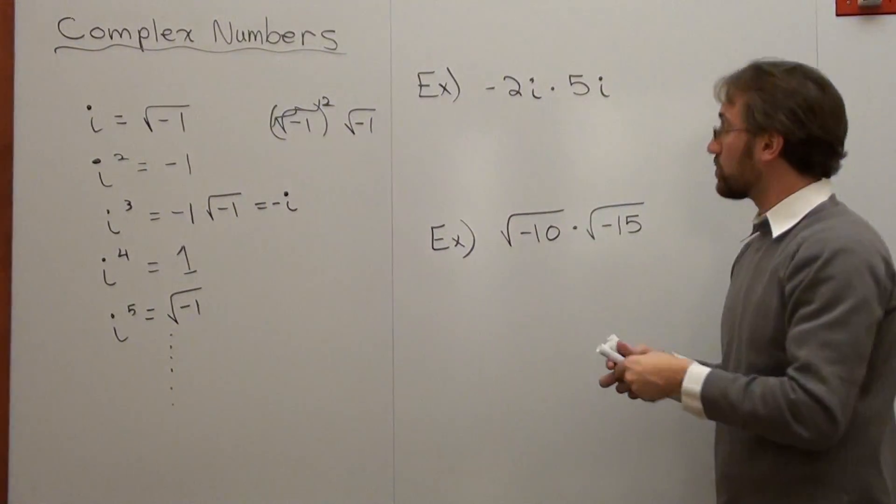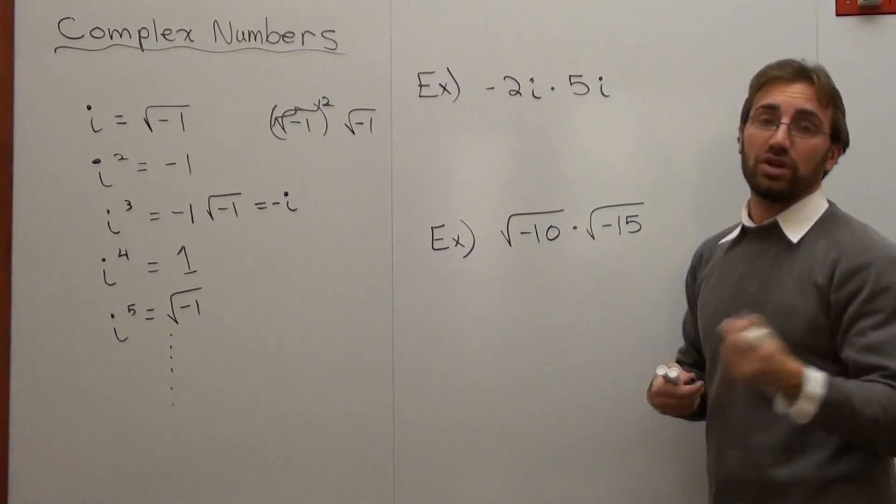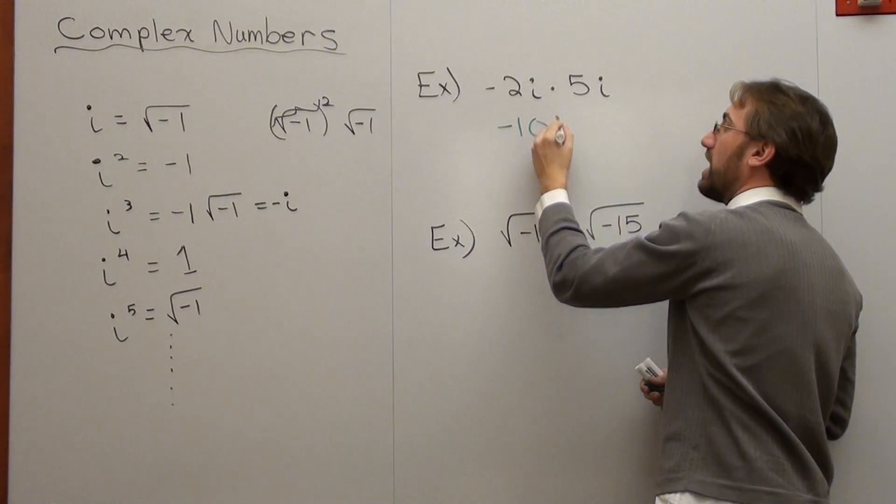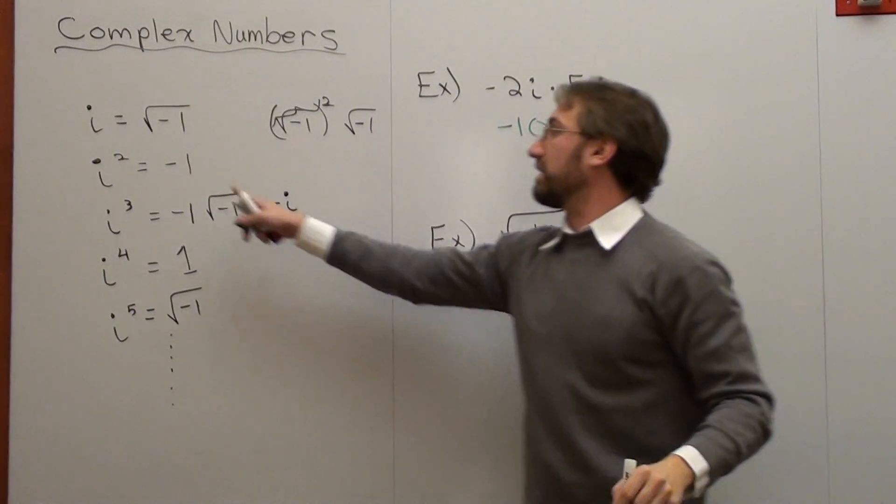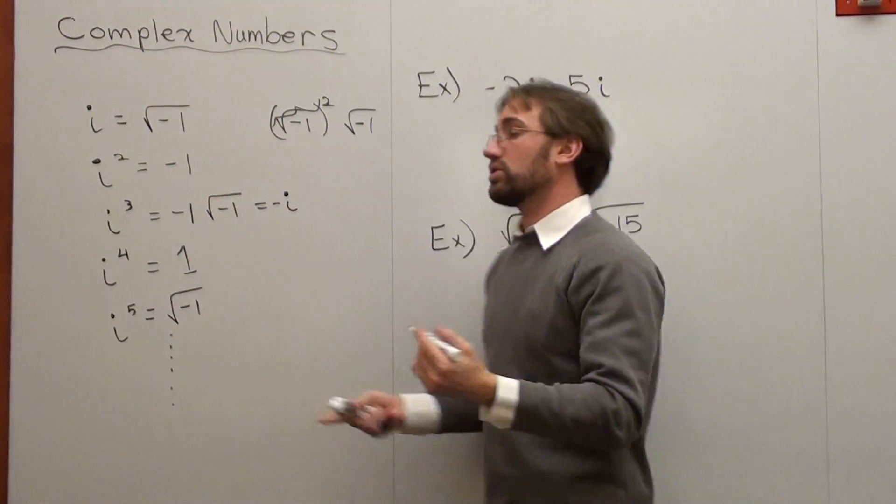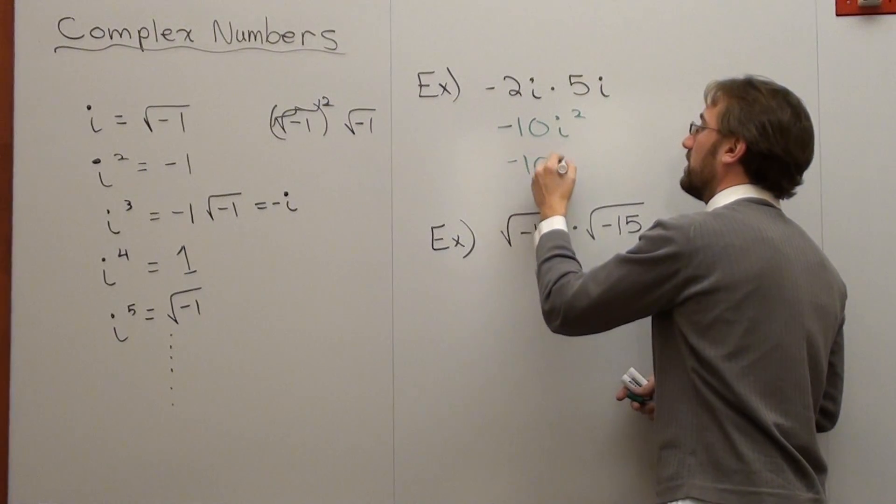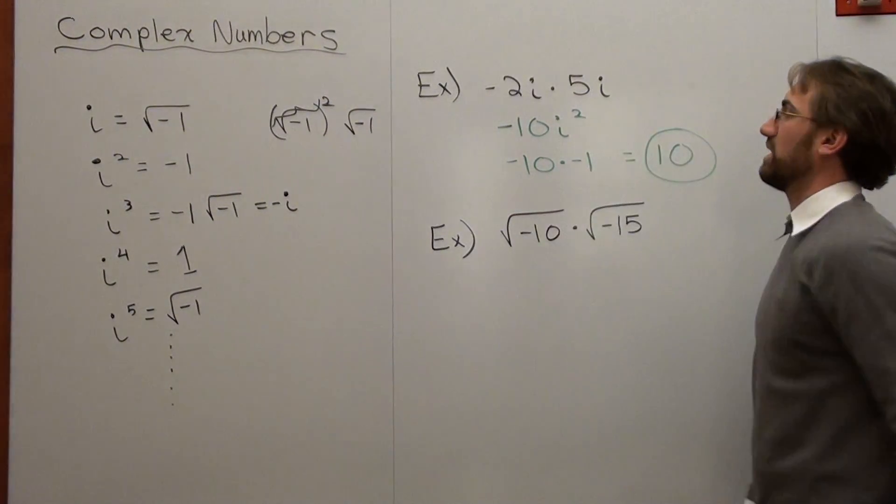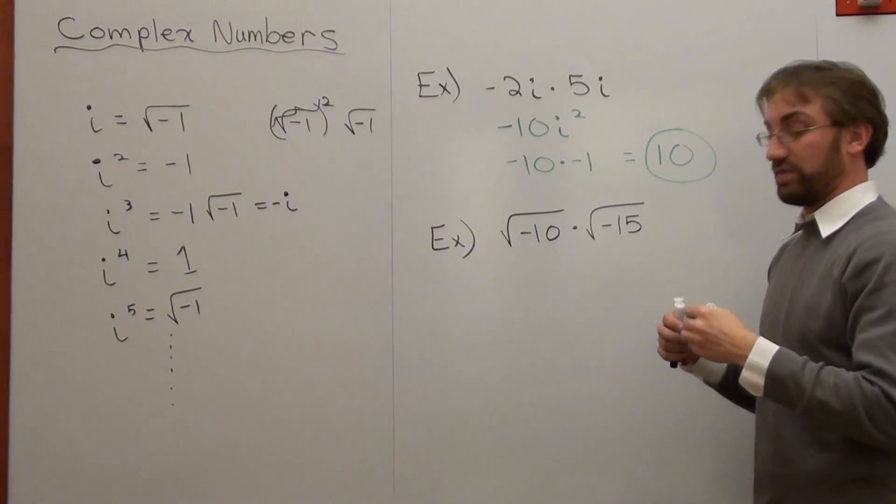Let's try to do this one. So I got negative two times five, which is negative ten. And I have i times i, which is i squared. But i squared, by definition, is negative one. So it's negative ten times negative one, which comes out to ten. So that's an application of complex numbers.